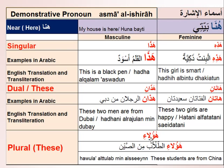For plural, whether masculine or feminine, we have only one word — 'haulahi'. For example, 'haulahi atalabu min asim' means 'these students are from China'. So for plurals that are nearby, whether masculine or feminine, we use 'haulahi'. For dual masculine nearby we use 'hazani', for dual feminine we use 'haatani', and for singular we have 'haaza' and 'hazihi'.